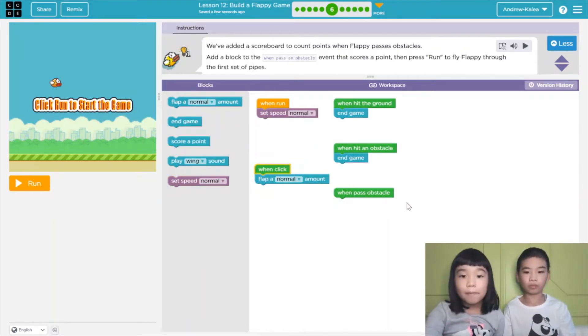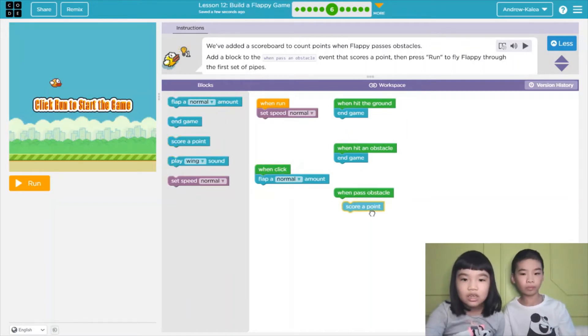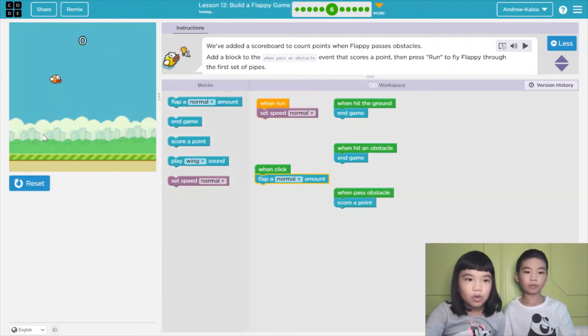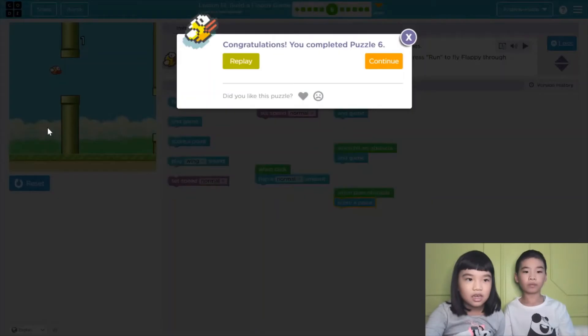We don't have a when passed obstacle. So we need a score point. There will be a scoreboard. See? There is zero because we didn't pass any pipe yet. We got one point! Yay!